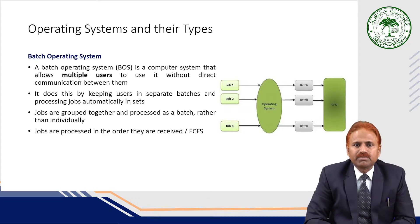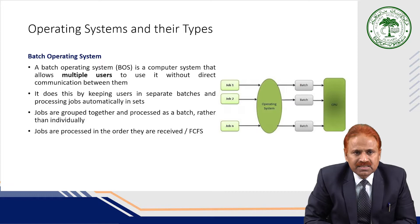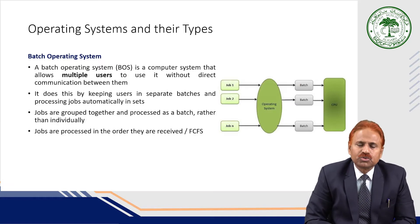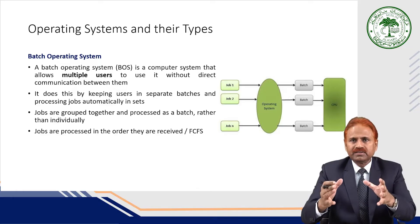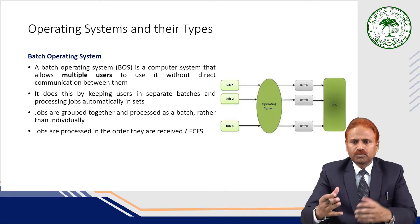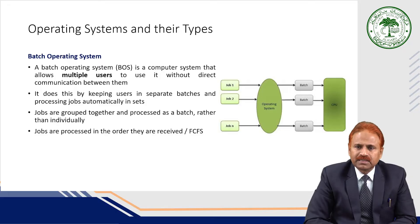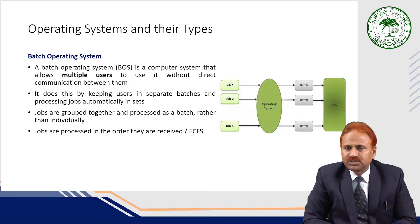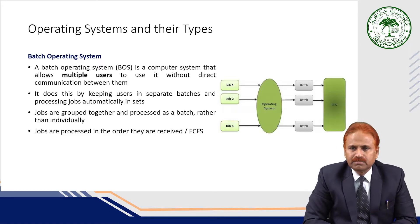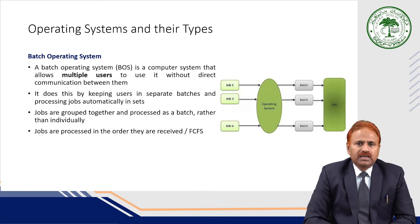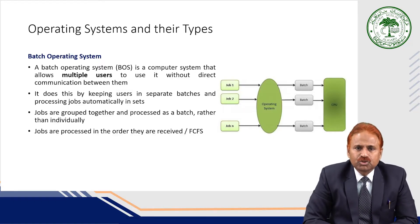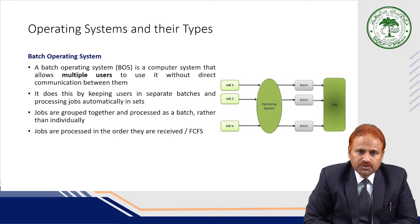The batch OS does this by keeping users in separate batches and processing jobs automatically in sets. The jobs are grouped — for example, job one, job two, job three — and they are passed on to the operating system. The operating system then processes batch number one, then batch number two, batch number three, and so on. Jobs are grouped together and processed as a batch rather than individually.